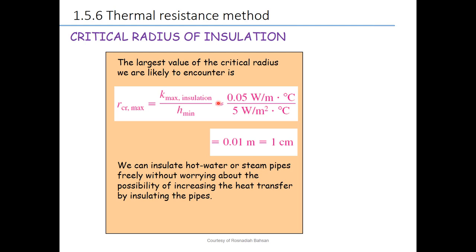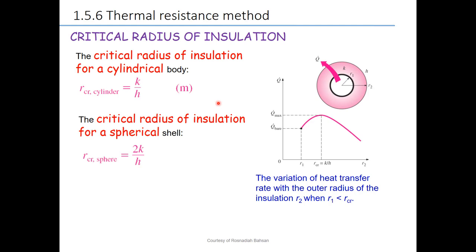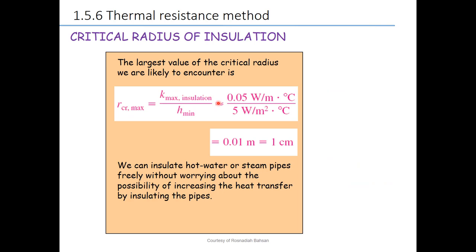If you look at any insulator in your home — for example, the insulator for the piping system for a split air conditioner — you can see that the insulator thickness is more than 1 centimeter. We need to know the critical radius just for fundamental study, so that you do not make the mistake of insulating any pipe with insulator radius less than the critical radius. That is all for chapter 1, for the critical radius of insulator.